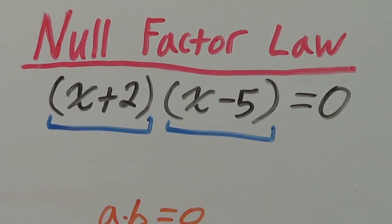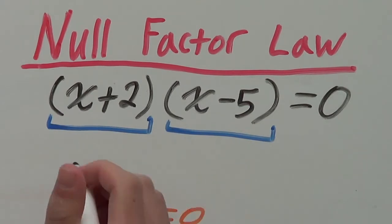If this was equal to zero, x would be equal to negative two because negative two plus two is zero.